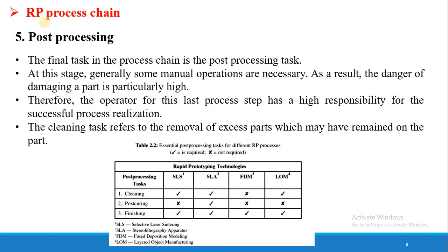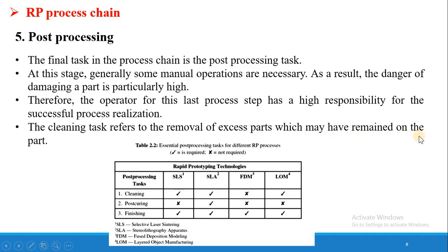Post processing is the last step of the Rapid Prototyping process chain. At this stage, some manual operations are generally necessary, and the danger of damaging the part is particularly high. In post processing, unwanted attachments connected to the final product are removed manually. Therefore, the operator of this last step is highly responsible for successful process realization — a mistake at this stage can cause the entire activity to fail. The cleaning task refers to removal of excess material that may have remained on the main part, including extra support structures provided during manufacturing.